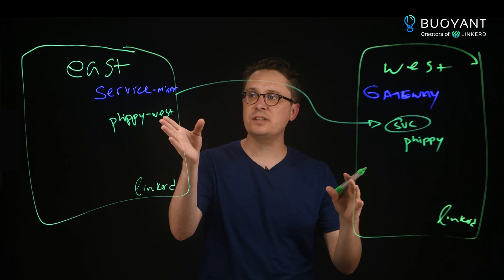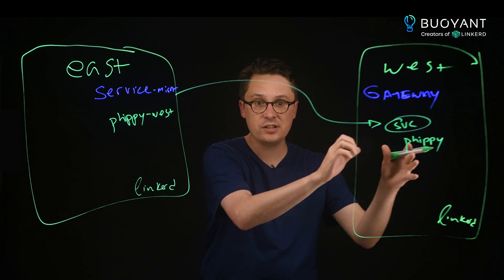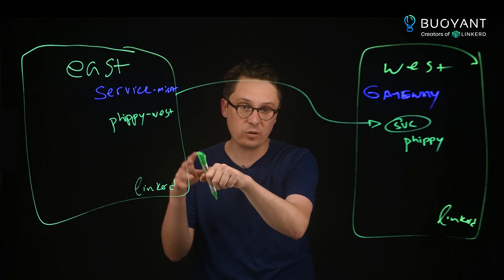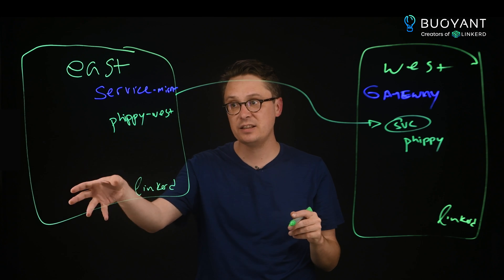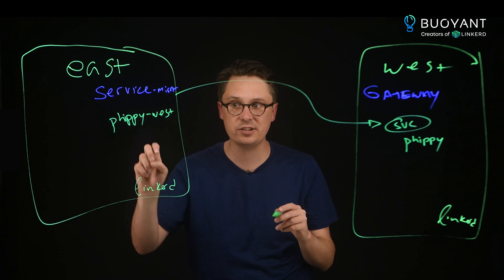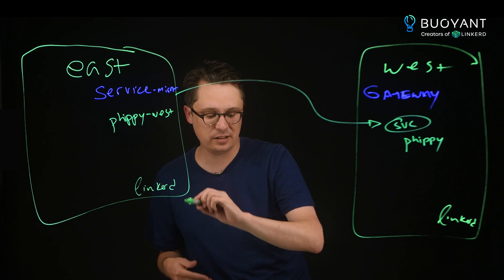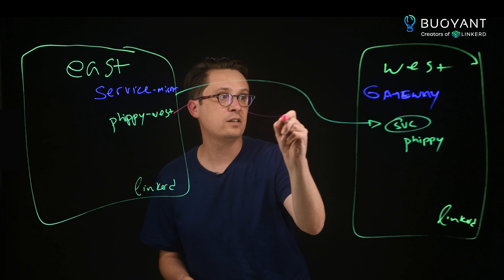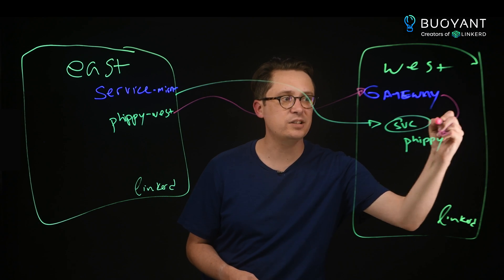This works because the service mirror, as it sees the service be created, creates a single endpoint or a few endpoints that only reflect the gateway IP address. So anything that connects to the cluster IP of FIPPY West in the East cluster ends up being routed by the Linkerd proxy to the gateway, which then forwards it to the pods in the FIPPY cluster.